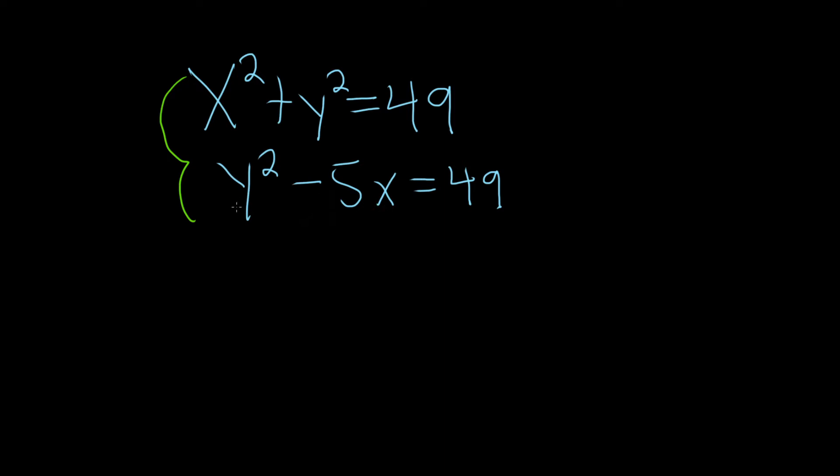And when we do that, what will happen is that the y squared will cancel and so will the 49. So multiplying the first equation by negative 1, we're going to have negative x squared, negative y squared equals negative 49. So just putting a negative on each term.